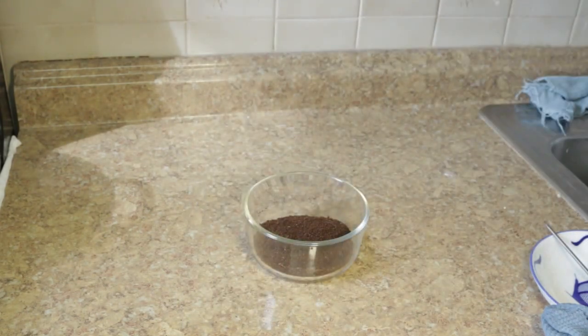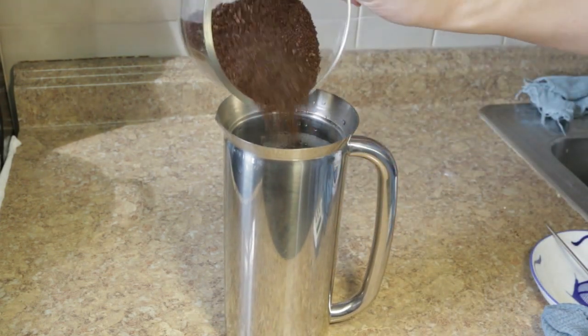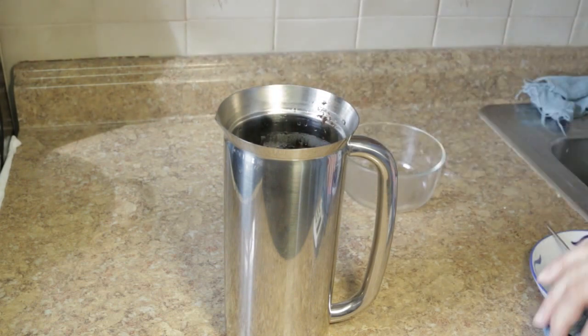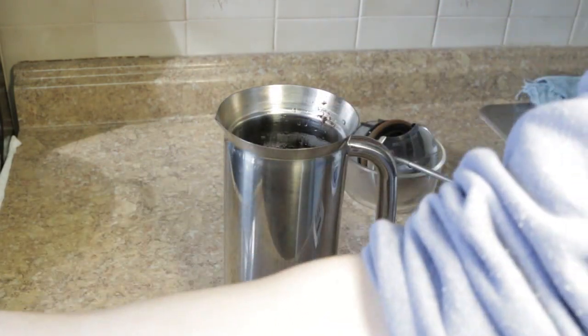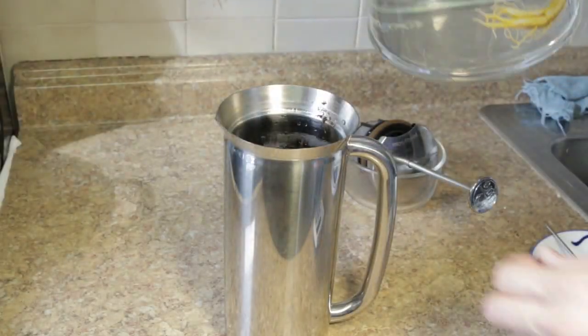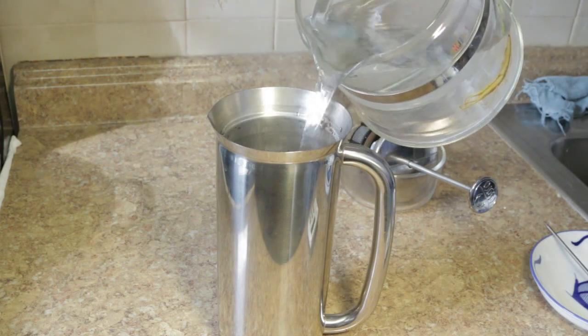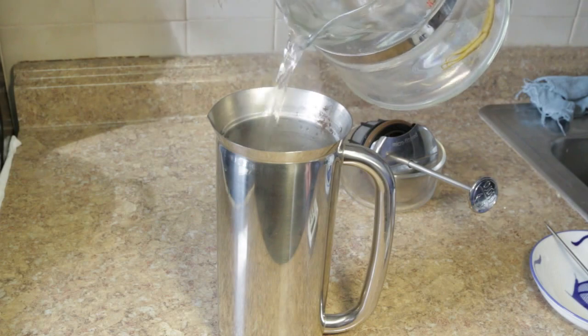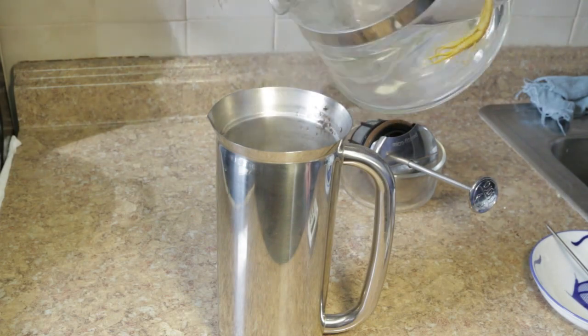So I'm roughly using about 36 grams of coffee. And I'm going to start filling the pot. Now on this, basically I filled up 36 grams to the very top line. That's roughly about 600 milliliters of water. In this particular case, I'm not using a scale. I'm basically just following the directions of the book.